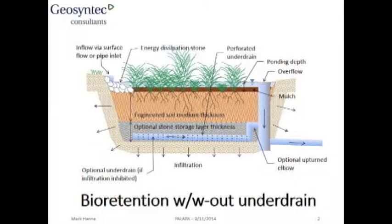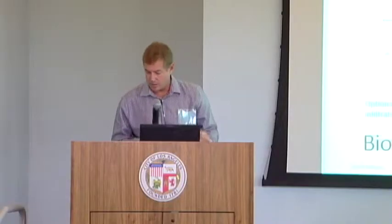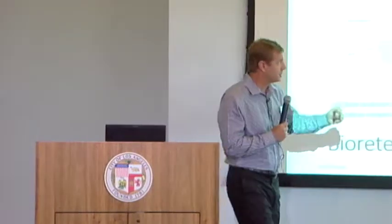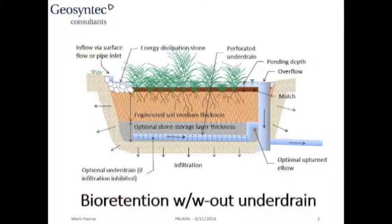Each implementation has a set of things that are part of it. There's conveyance — you've got to get water to it. Pre-treatment, if possible. Storage, of course, to hold the water. The ability to dissipate the water through either infiltration, filtration and release, evapotranspiration, and an overflow bypass in case too much water gets to your system. This actually has a detail for an upturned elbow, which allows for ponding to occur if infiltration is not happening. That will create an anaerobic zone to help treat nutrients through a nitrification process if the downstream water body is polluted for nutrients.